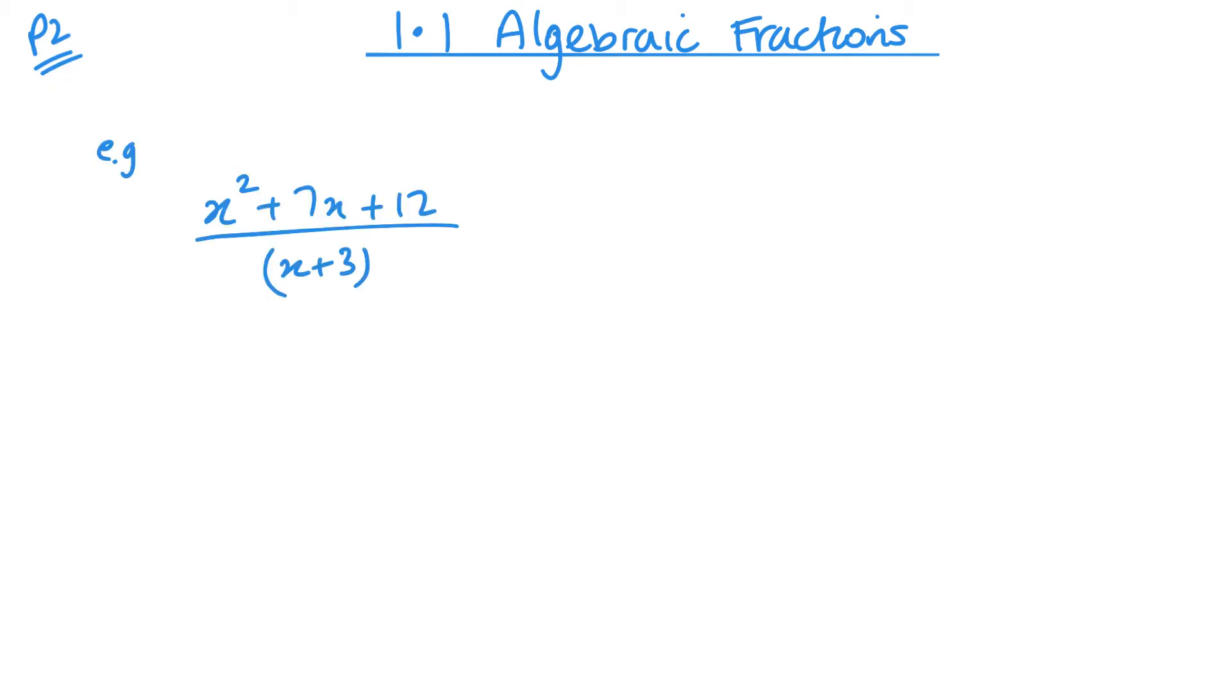So you have a question, then you want to factorize everything you can, then you want to cancel those factors that are the same. This works because everything's multiplied, which means you can cancel the whole bracket. That's why factorizing is important. Once we've cancelled, we're left with whatever's left over.